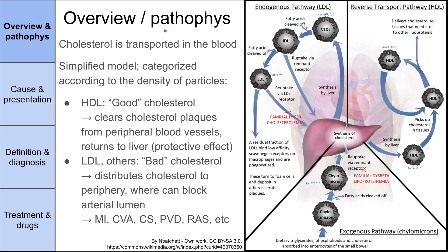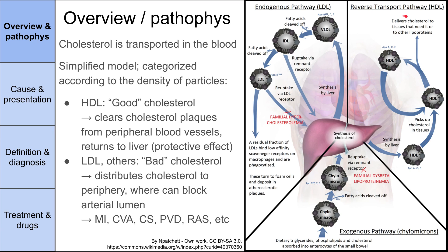Let's start with an overview of the pathophysiology of hypercholesterolemia. There's pretty complicated biochemistry going on here with metabolic pathways. In general, there's an exogenous pathway of stuff getting absorbed from the gut, cholesterol making its way over to the liver where it's synthesized and then distributed out to the periphery in the endogenous pathway. And then stuff is returned from the periphery back to the liver in the reverse transport pathway.